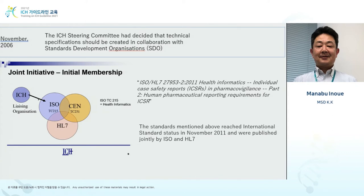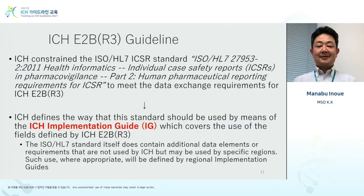One of the reasons was the SDO process implementation in 2006. In the case of the first E2B, the specifications were developed internally in ICH. But for R3, the technological specification was not developed internally. Instead, the development was outsourced to a third party, and the standard development organization process was introduced. ISO, HL7, and SNOMED collaboration was the basis for developing specifications for R3.